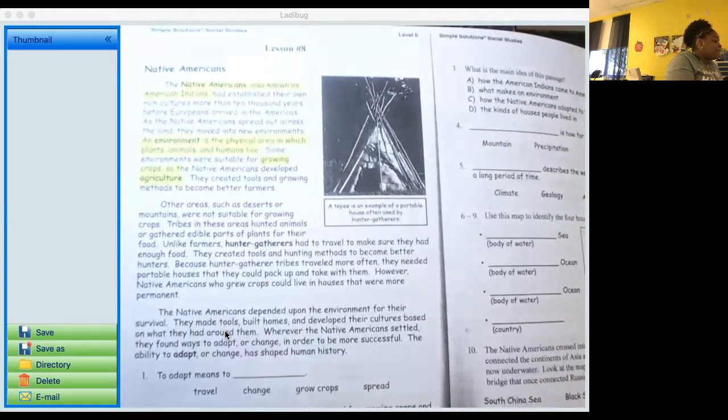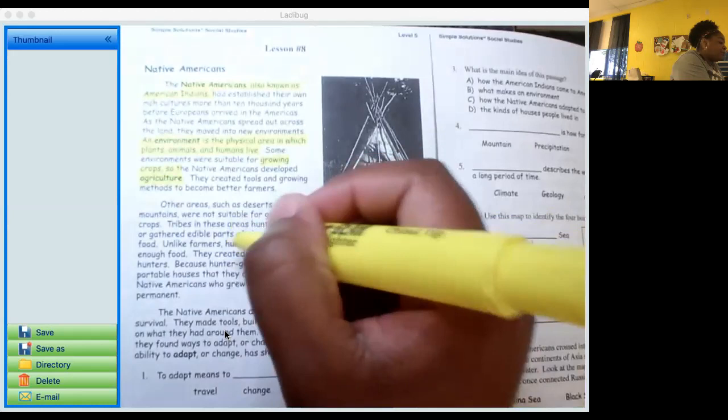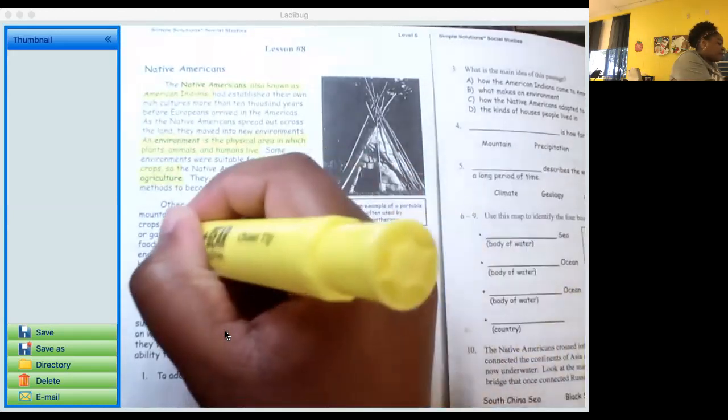Growing crops, agriculture. They created tools and hunting methods to become better farmers. Other areas such as deserts or mountains were not suitable for growing crops. Tribes in these areas hunted animals or gathered edible parts of the plants for their food. Unlike farmers, hunters and gatherers had to travel to make sure they had enough food. Okay, let's highlight that sentence.